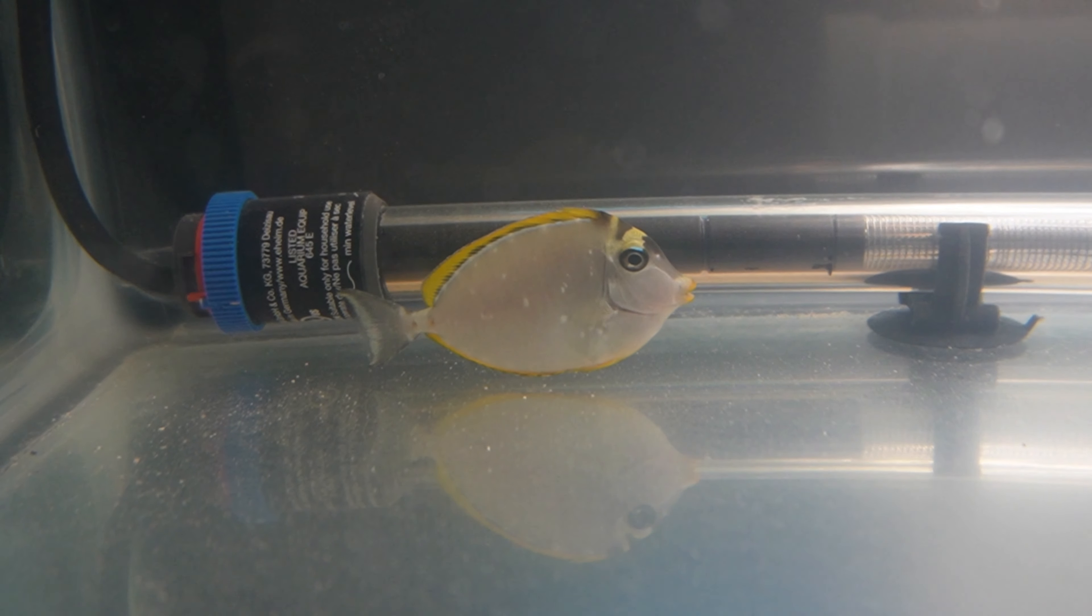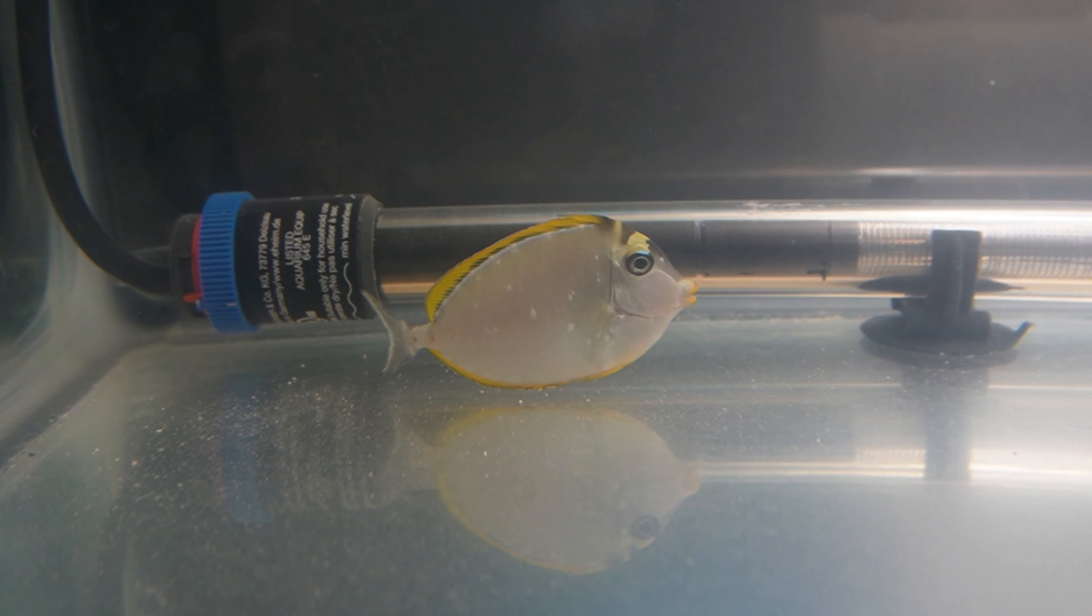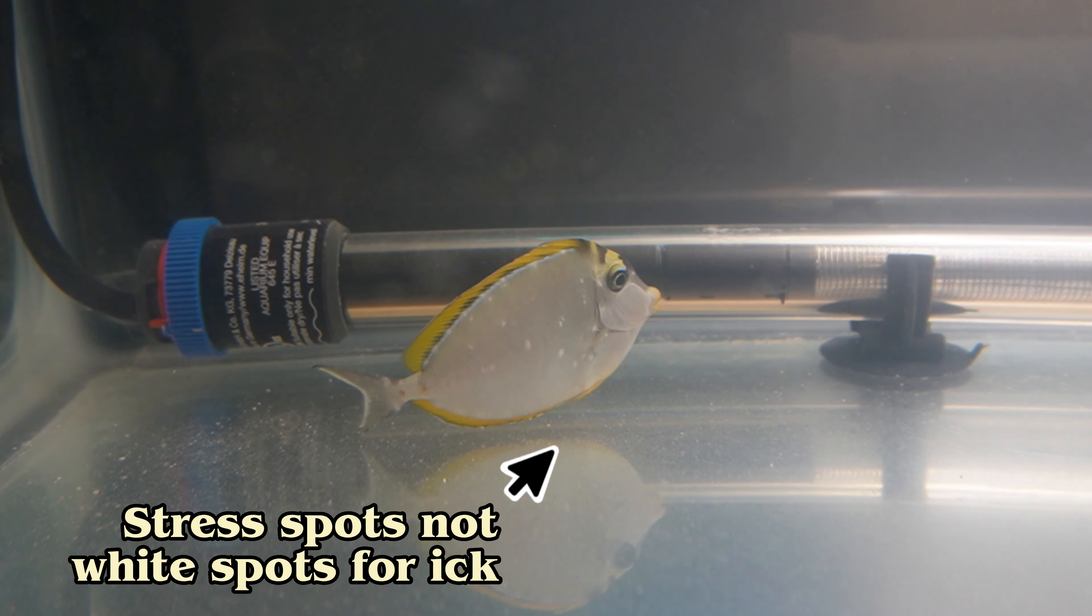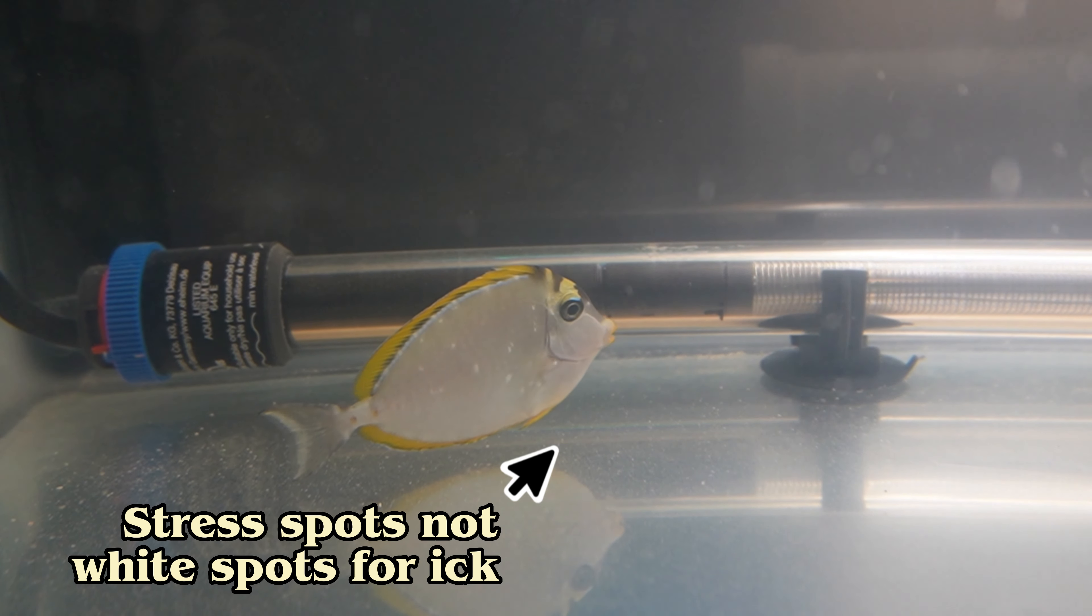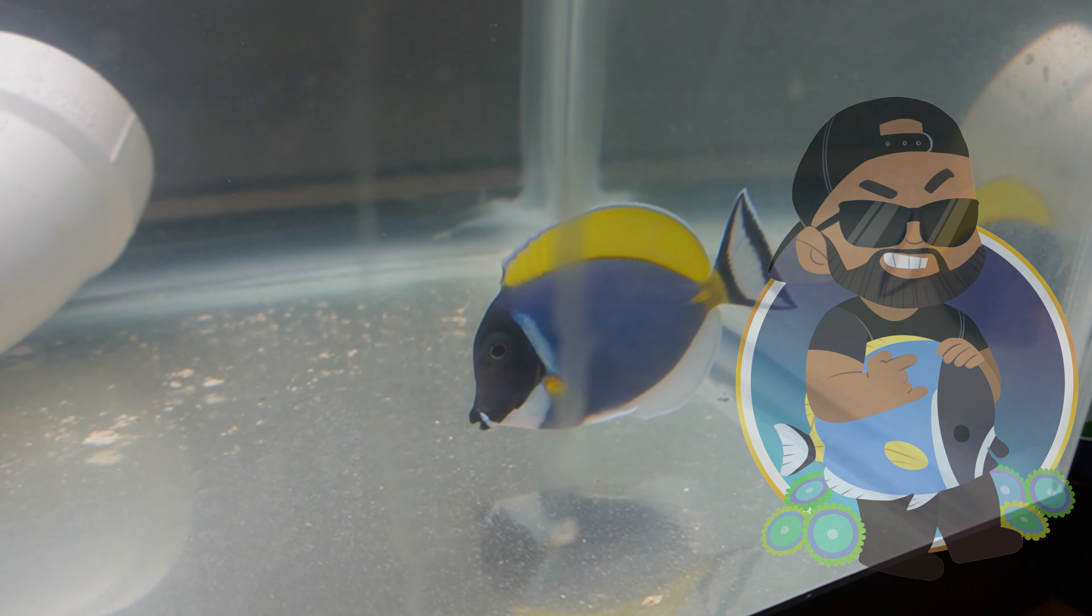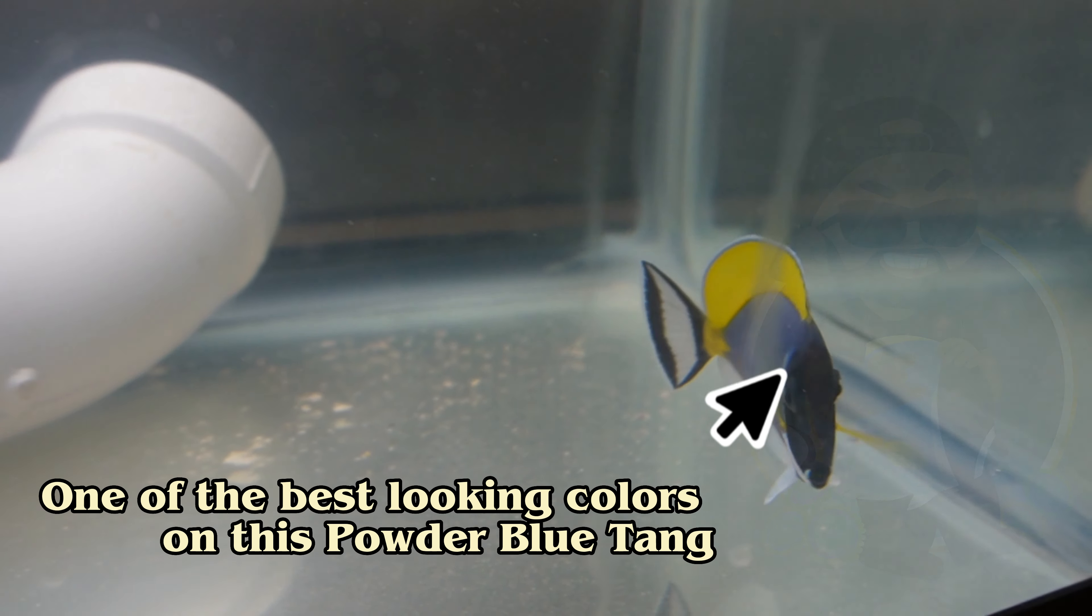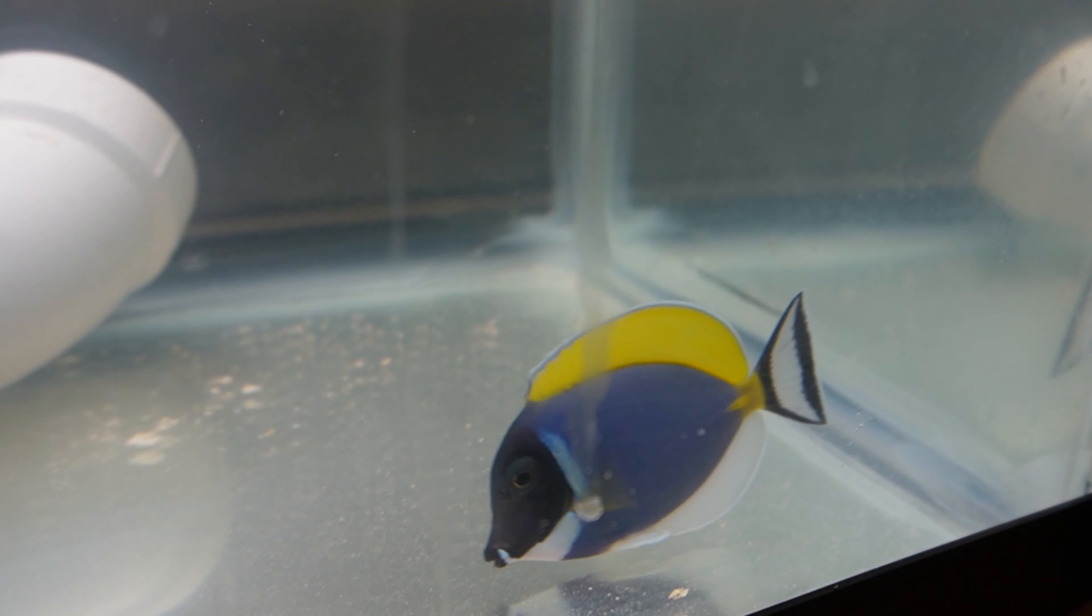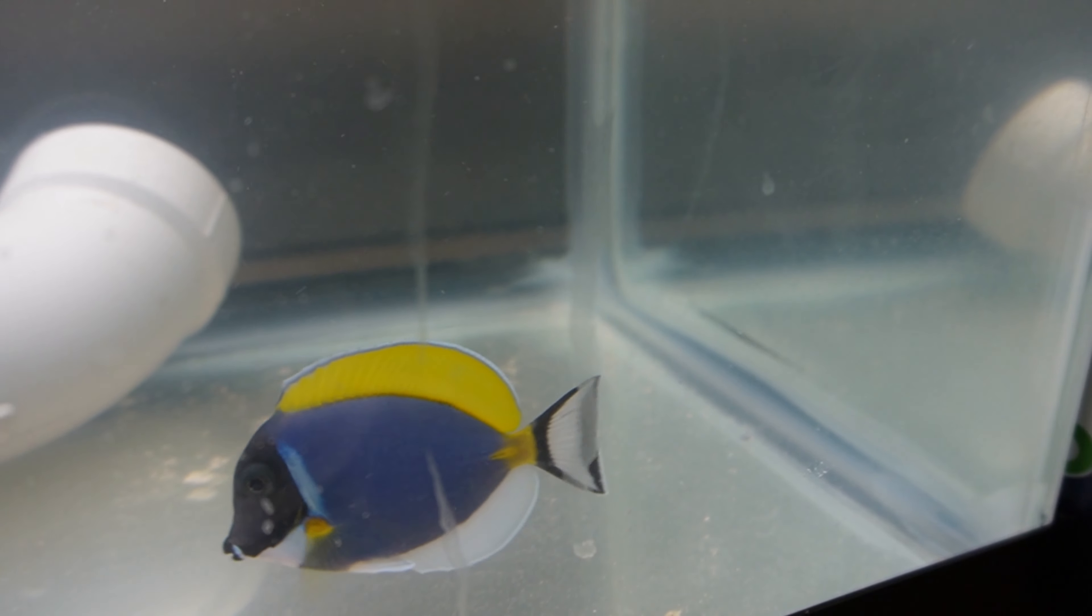Now I noticed white spots on the naso tang. It didn't look like ich - it almost looked like stress, almost like how the foxface does that different coloration. Again, here's another look at the powder blue looking really good. No signs of any external parasites, no heavy breathing, swimming around good.